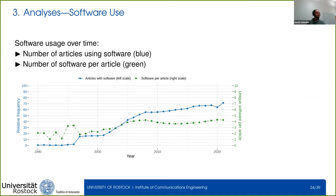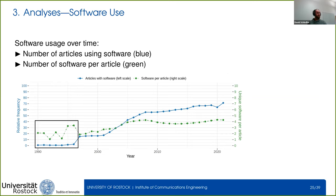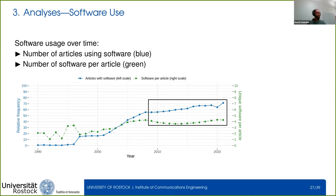Looking at software usage over time more generally: the blue line shows the relative amount of articles that use software, and the green line shows the number of software used per article within articles that do use software. There is not much software usage before 1997, then a steep increase between 2001 and 2008 from less than 20% to over 55% of articles using software. In the following timeframe through 2021, software usage further increased steadily to over 70%.